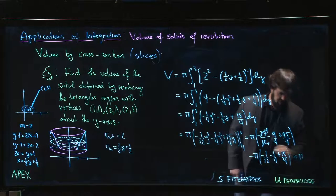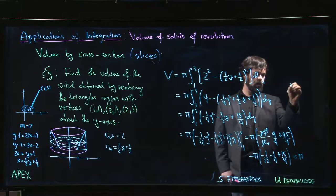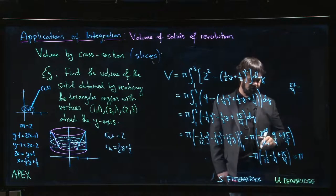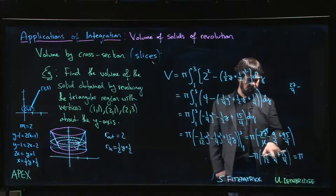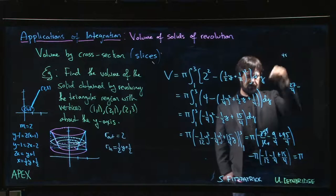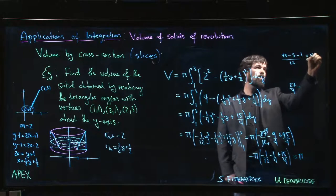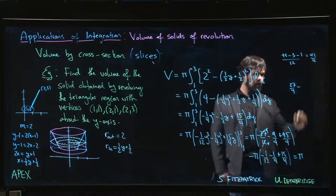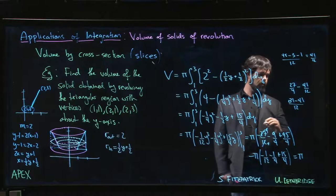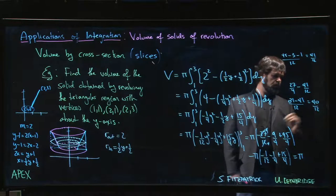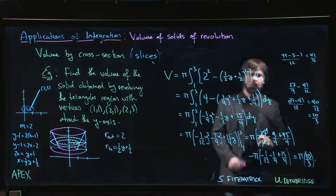And the rest is adding fractions. So here we have 45 minus 18 over 4, leaves us with 27 over 4 from this limit. Minus, so here we're going to have 14/4 minus 1/12. So we have 45 minus 3 minus 1 over 12, so that's 41/12. So 27 minus 41/12, so 81 minus 41 over 12 gets us to 40/12, which is 10/3. So 10π/3 for the volume.